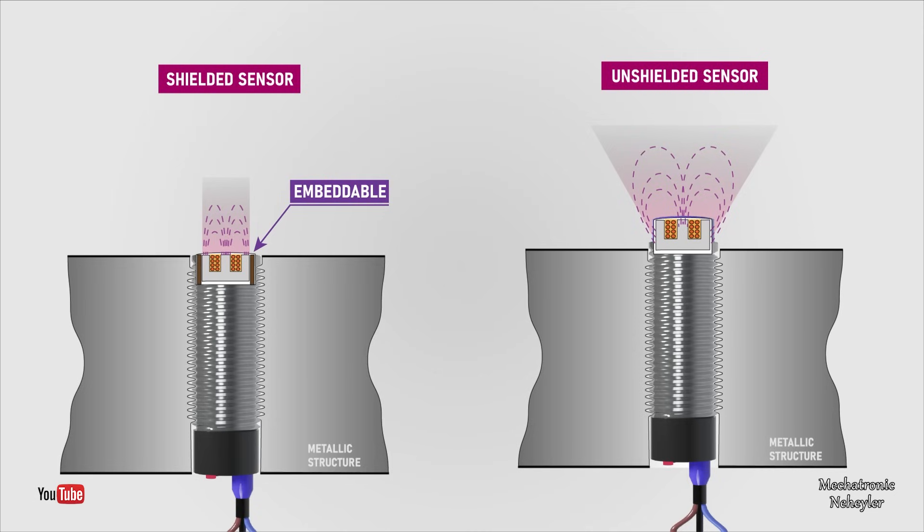An unshielded sensor has a protruding face, and inside, the coil does not have a metal shield around it, giving it a much larger sensing area. If the sensor is not shielded, its installation necessarily has to be non-flush — the active face of the sensor protrudes out and its operation is not affected by the metal structure that supports it.